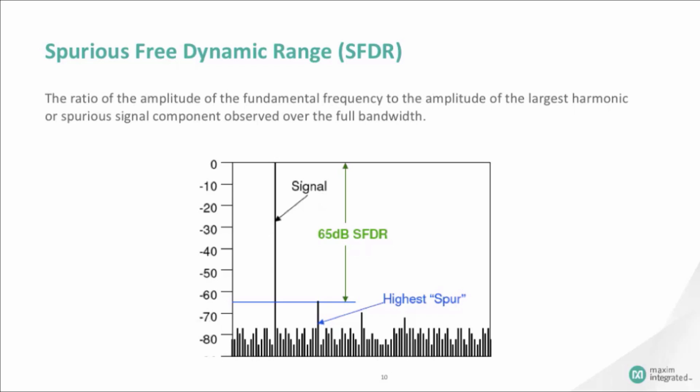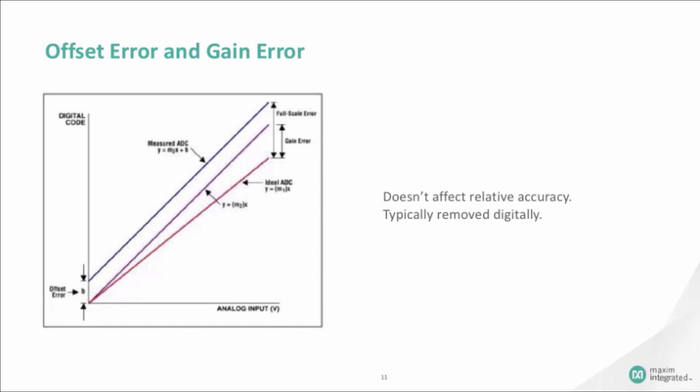Offset error, often called zero-scale error, indicates how well the actual transfer function matches the ideal transfer function, at a single point. For an ideal data converter, the first transition occurs at 0.5 LSB above zero. For an ADC, the zero-scale voltage is applied to the analog input and is increased until the first transition occurs.